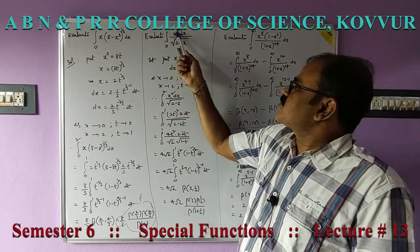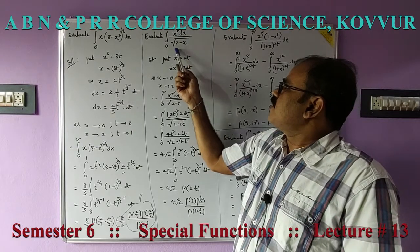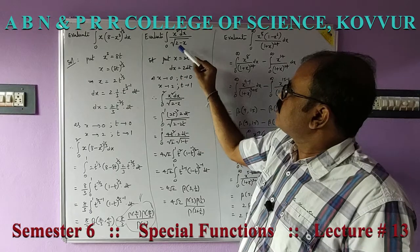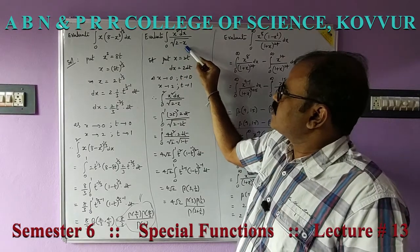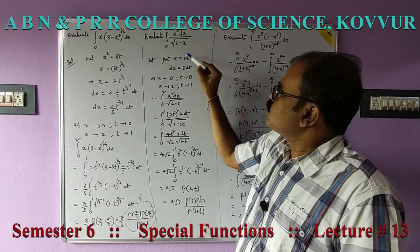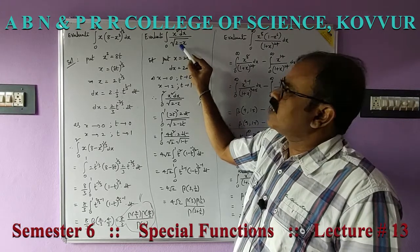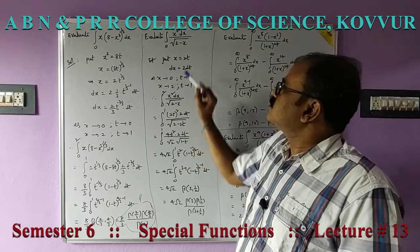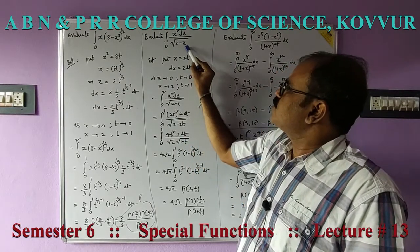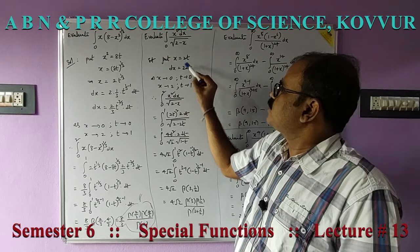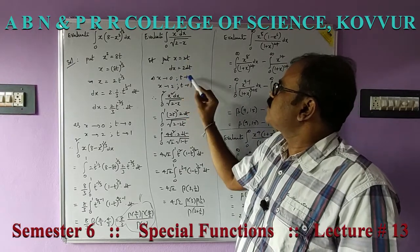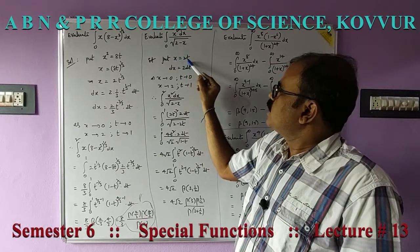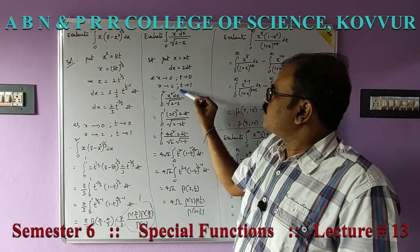Evaluate integral 0 to 2 of x² dx / √(2−x). Here the substitution is x = 2t, so dx = 2 dt. As x tends to 0, t tends to 0, and as x tends to 2, 2 = 2t, therefore t tends to 1.